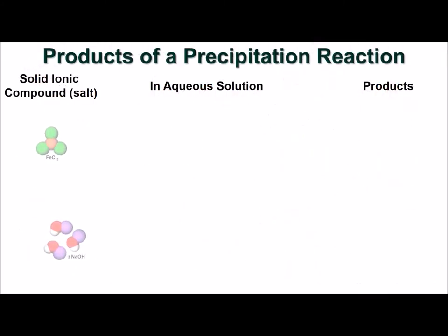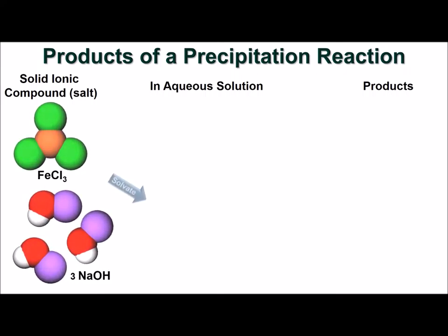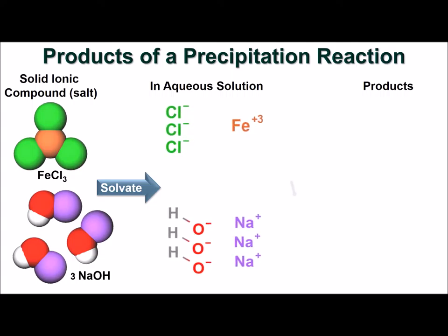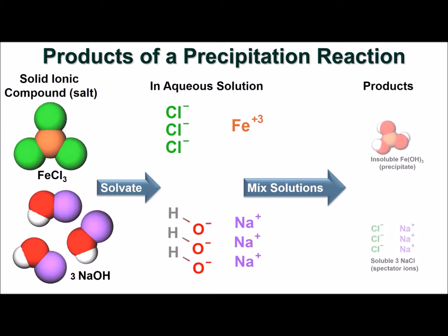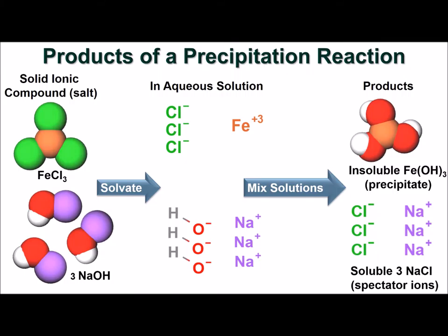This example shows the progression of a precipitation reaction. Soluble ionic solids are dissolved in water to form aqueous solutions. The solutions are mixed, and the precipitate iron-3-hydroxide is formed. The aqueous solution remaining is a mixture of sodium ions and chloride ions in water. The ions that do not participate in a reaction are called spectator ions.